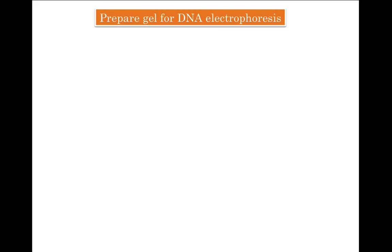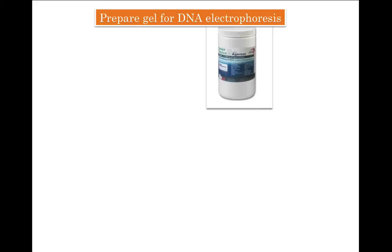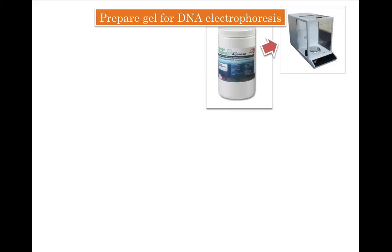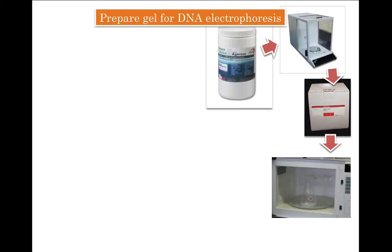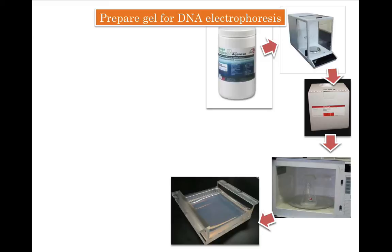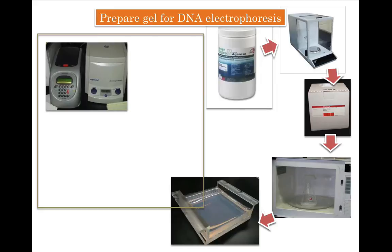To make a gel, you need to take some agarose, weigh the amount needed, add a measured amount of buffer to it, and then microwave — or heat it on a hot plate or burner — to dissolve the agarose. Then pour the slurry into a gel case. Once it cools down, it solidifies and is ready for electrophoresis. The most common buffers used are TAE or TBE. Now let's imagine you successfully did a PCR and wish to analyze the amplified DNA by electrophoresis.